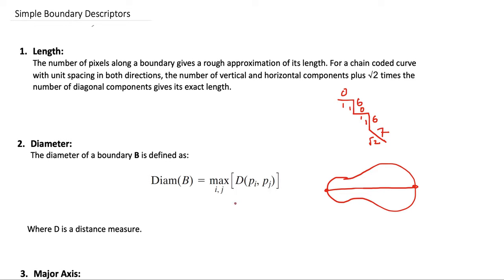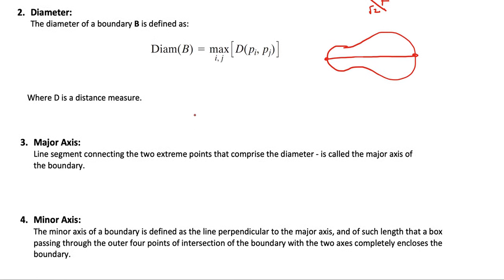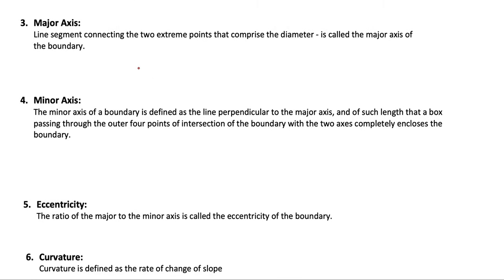The symbol D represents the distance measure, which can be the Euclidean distance, city block distance, or chessboard distance — the choice depends on the metric used for the application. The major axis of a boundary is defined as the line segment connecting the two extreme points that comprise the diameter.